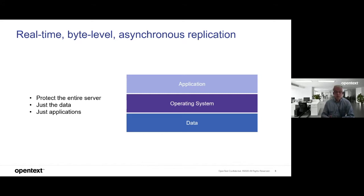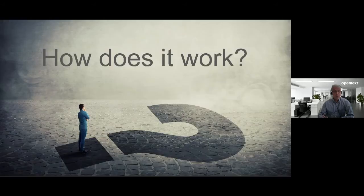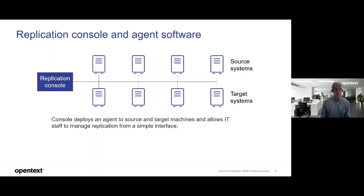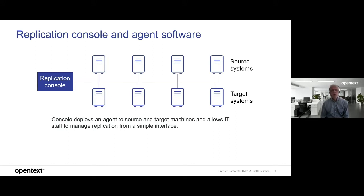How does it work? What we have to install is a replication console. We have N source systems — in my case only two, a source system and a target system — but you need only one console. The administrator responsible for the backup system or cloning different servers can use the application console to get the job done.